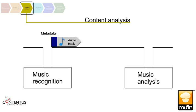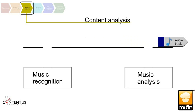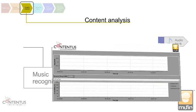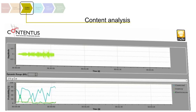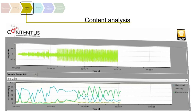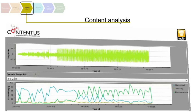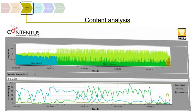Now the audio signal is being analyzed. First of all, the software determines if the musical piece consists of multiple parts which deviate from each other considerably. For instance, the song may have a different intro.